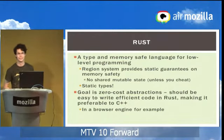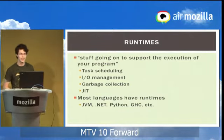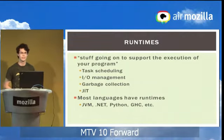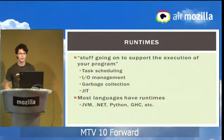One example application is a browser engine, like Servo, which Tim talked about recently. The runtime is just a bunch of stuff that goes on to help your program run. Sort of nebulously defined, and what it actually does can vary depending on the language. The JVM is an example runtime. Pretty much every language but C or C++ has a runtime of some sort. In Rust, we rely on the runtime to schedule the lightweight Rust tasks, and it's also responsible for I/O management and garbage collection.